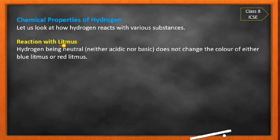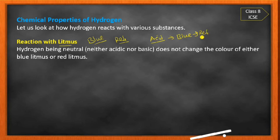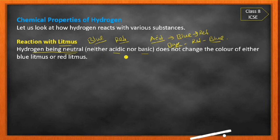Now the reaction with litmus. There are two litmus papers: blue and red. If a substance is acidic, blue litmus turns red. If a substance is basic, red litmus turns blue. However, hydrogen is neutral — it is neither an acid nor a base — so there is no change in any litmus paper. Both blue and red remain unchanged. Therefore hydrogen is neutral in nature.